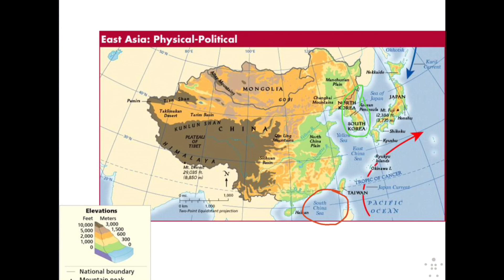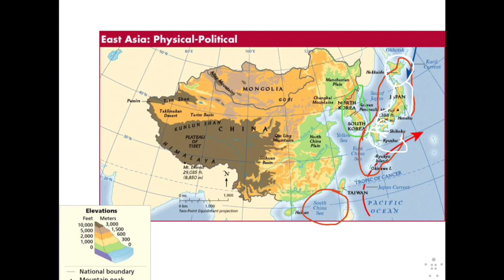Then we move on to Japan. Japan is what's known as an archipelago — an island chain. This island chain has four large main islands and then thousands of mountainous islands. Your main islands, which you will be responsible for knowing on a map quiz, are Hokkaido in the north, Honshu, Shikoku, and Kyushu. You can see those located and circled in white on your map.